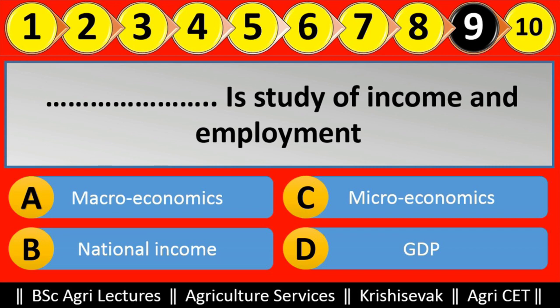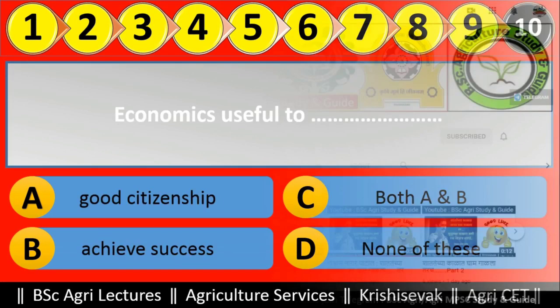Question number ninth: dash dash is the study of income and employment. Options are: macroeconomics, national income, microeconomics, GDP. The right answer for this question is macroeconomics, that is option A.